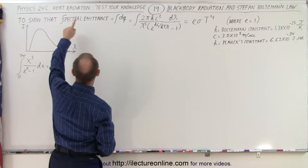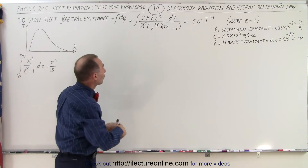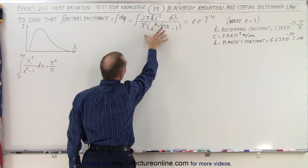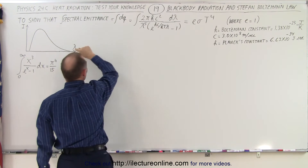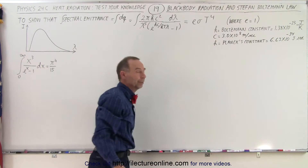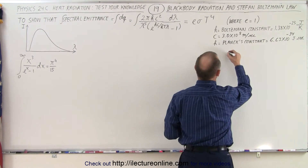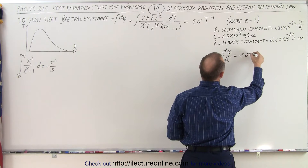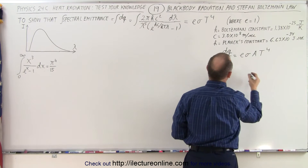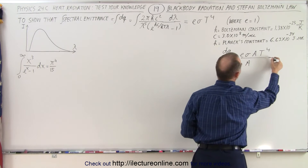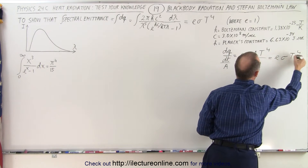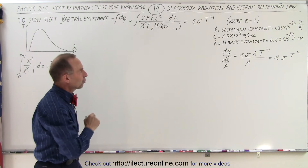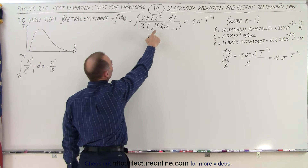What we're going to do is show that if we take the integral of the spectral emittance of an object — call that dq — and integrate over dq, then if we integrate over the equivalent equation describing the spectral emittance of a black body radiator, we get e·σ·T⁴. Remember that the power, dq/dt, according to Stefan-Boltzmann's law is e·σ·A·T⁴, and dividing both sides by area gives e·σ·T⁴ — the emittance per unit area. That's what we're trying to show.